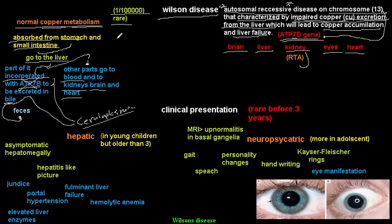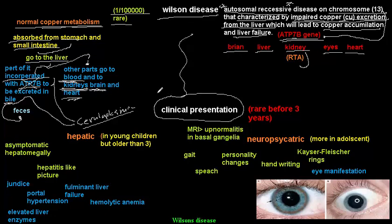Furthermore, as copper accumulates in the liver, excretion shifts from bile to the kidneys, causing copper to accumulate in the kidneys, blood, brain, heart, and eyes. This leads to a distinctive clinical presentation in each organ affected by copper accumulation.